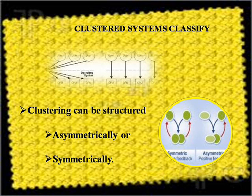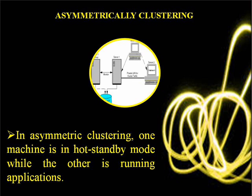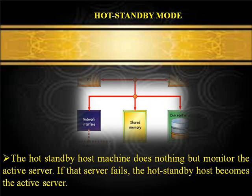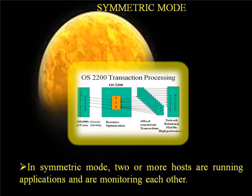Clustered Systems can be structured asymmetrically or symmetrically. In asymmetric clustering, one machine is in hot standby mode while the other is running applications. A hot standby host machine does nothing but monitor the active server; if that server fails, the hot standby host becomes the active server. In symmetric mode, two or more hosts are running applications and are monitoring each other.